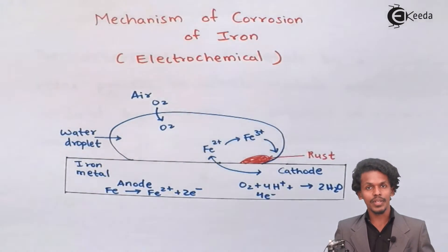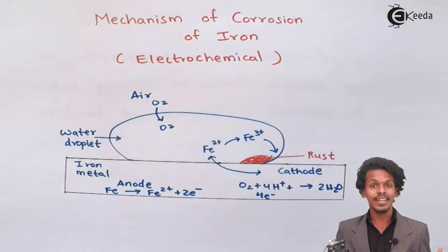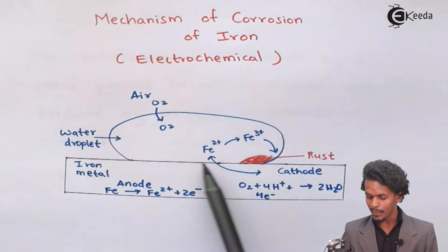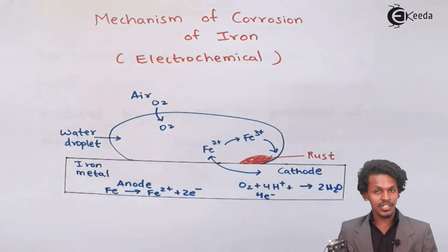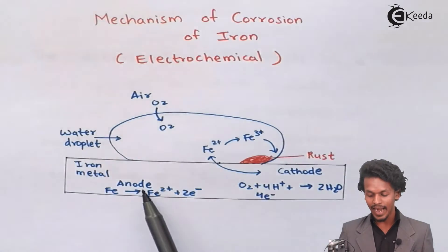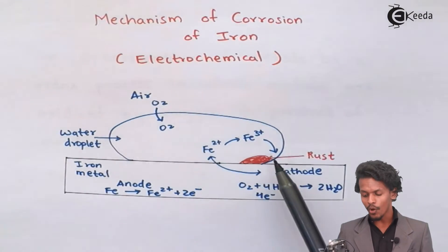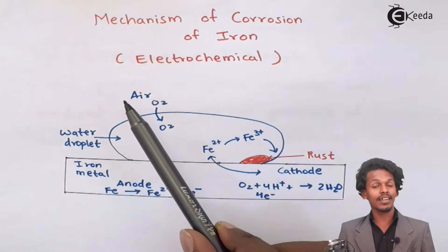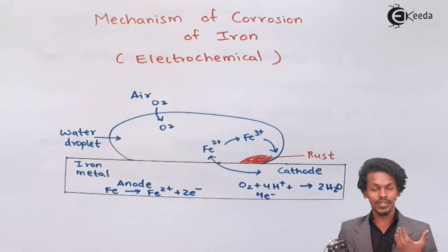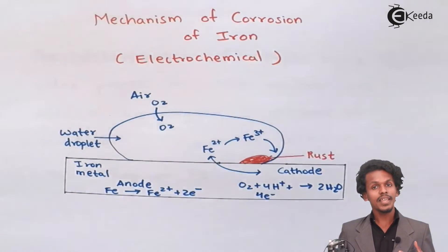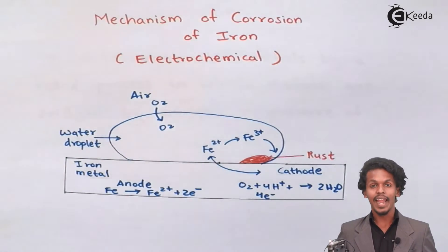Now we are going to talk about how corrosion arises in iron electrochemically. This black bar is the iron metal. If it has to undergo an oxidation process and a reduction process, the oxidation process will act on the anode side while the reduction process will act on the cathode side. This results in the formation of rust in the presence of air, where moisture is also present.